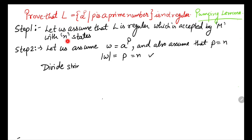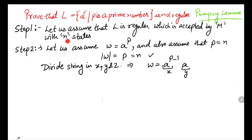In the same step, we divide the string into x, y, and z, so that w = a^(p-1) · a · ε, where x = a^(p-1), y = a, and z = ε. The length of xy = (p-1) + 1 = p = n, satisfying the condition. y is not epsilon so y exists, and there are no restrictions on z.